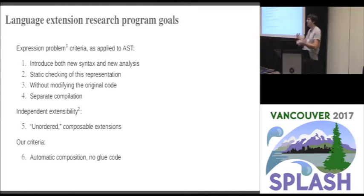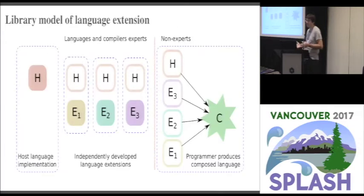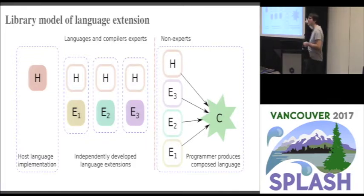If we solve the expression problem, we can tack on new analysis and new syntax, but we can't compose those two things together. We want to go one step further: automatic composition. When you have syntax and analysis, something has to implement the intersection between them, and we need to automatically solve that. The reason is we're pursuing the library model of language extension — you should be able to import language extensions like libraries. Independent extension developers produce their extensions, but we never see the final composed language until the user puts them together, and that combination could be entirely novel.